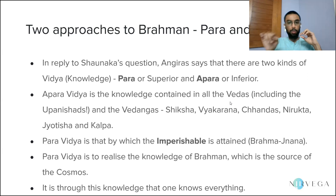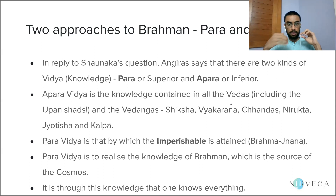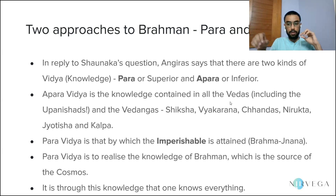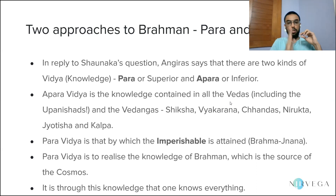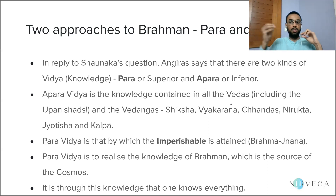Angiras first defines what Aparavidya is. He says Aparavidya is the knowledge contained in all the Vedas, and Vedas here includes the Upanishads also — Vedas plus Upanishads — and the Vedangas. The Vedangas are six in number: Shiksha, which is the science of pronunciation; Vyakarana, which is the science of Sanskrit grammar; Chandas, which refers to poetic meter; Nirukta, which is etymology; Jyotisha, which is astrology; and Kalpa, which refers to the science of ritual particularities, such as how to arrange a Yajna.